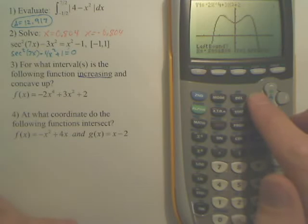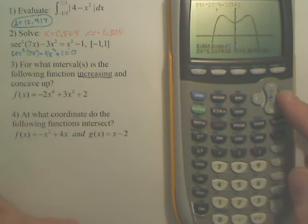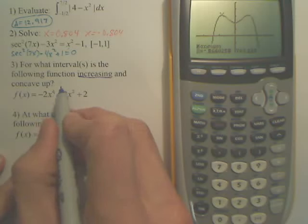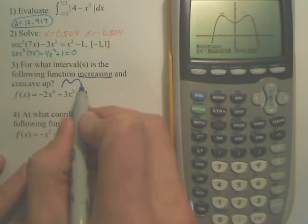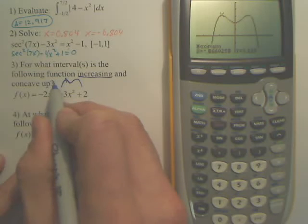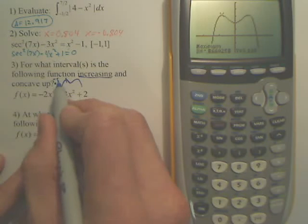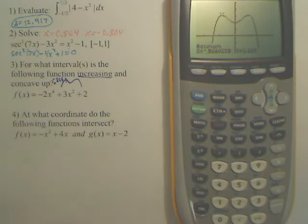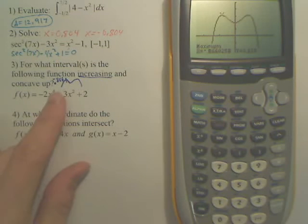So, you've got to go to that max hump, hit second, enter, walk your way across, hit enter. Guess, that first hump, it looks like this, you guys. That first hump is at negative 0.866, correct? That first hump is at negative 0.866.